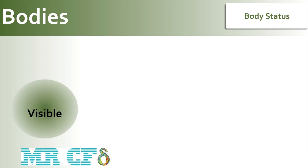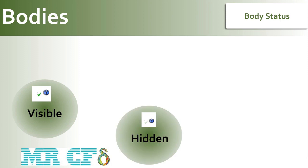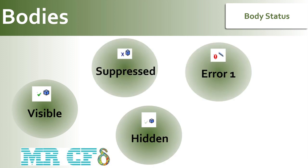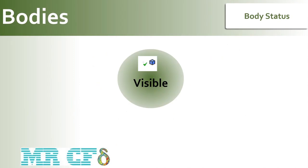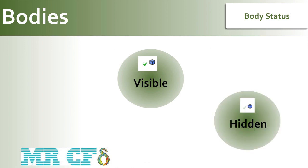The status of a body can be one of the following types: visible, hidden, suppressed, error 1, and error 2. A visible body is visible on screen and is denoted by a green check mark. A hidden body is not visible on the screen and is denoted by a light green check mark.